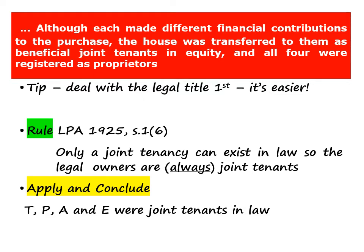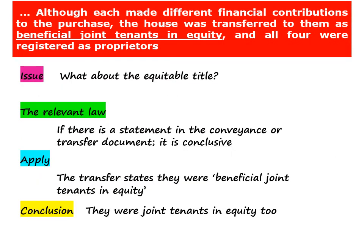However, this rule doesn't apply to the equitable title. So the issue now is which one is it in equity? The relevant rule is that any express statement in the original conveyance regarding the beneficial ownership is conclusive. Applying this rule, we can see that there was an express statement which confirms that the original owners were joint tenants in equity. So quite simply, if you see anything in the question which states that they were beneficial joint tenants in equity, then they are. The conclusion is that they were joint tenants in equity too.